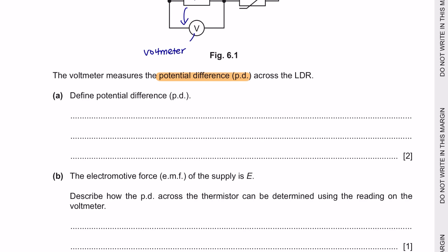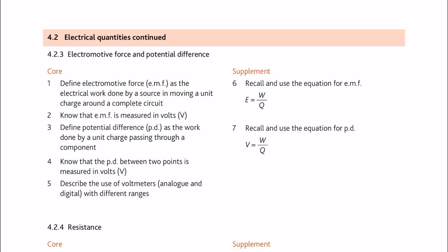Question A: Define potential difference. As for the definition, you can easily find it in your syllabus. Under chapter 4, you would see that potential difference is defined as the work done by a unit charge passing through a component.